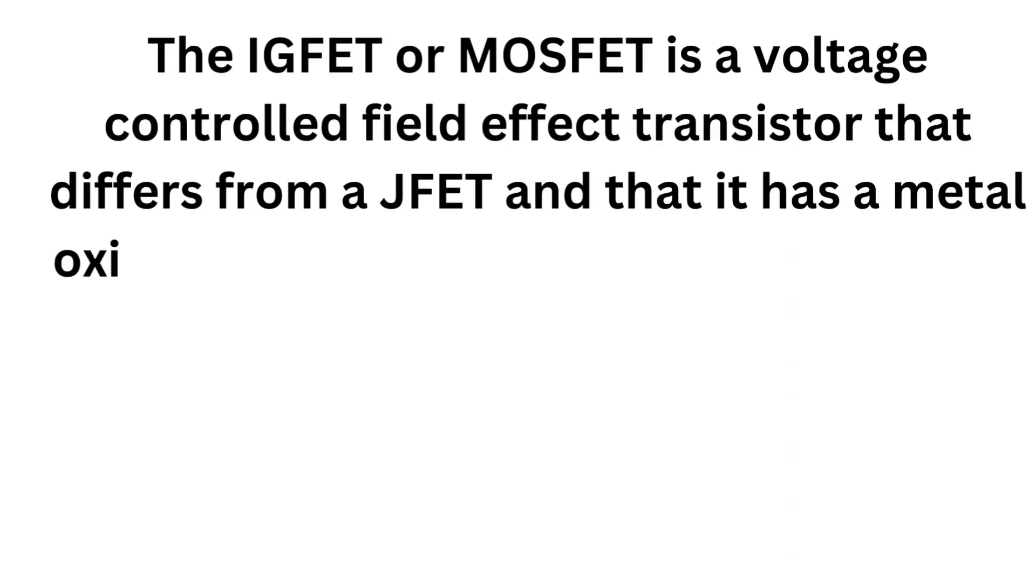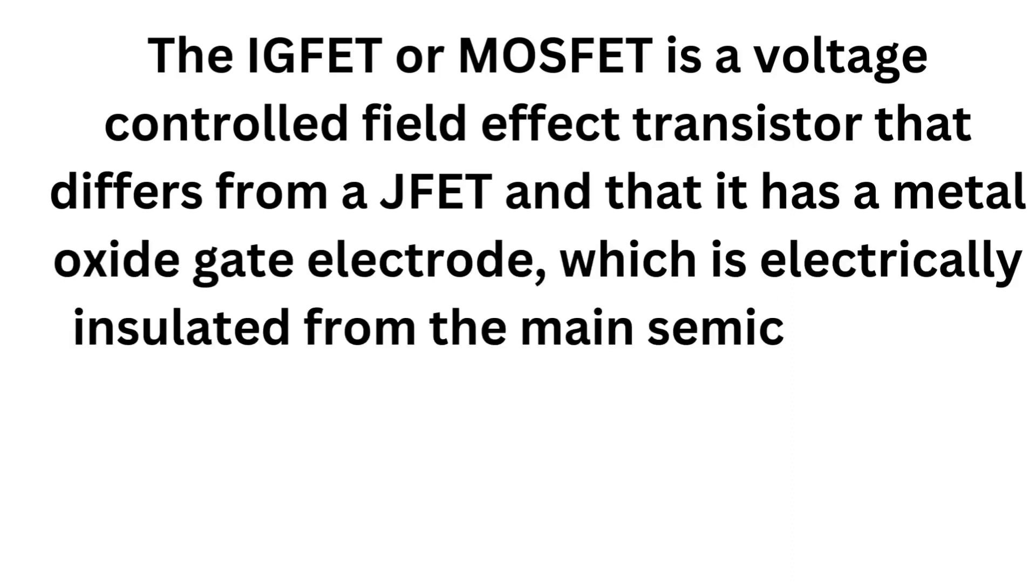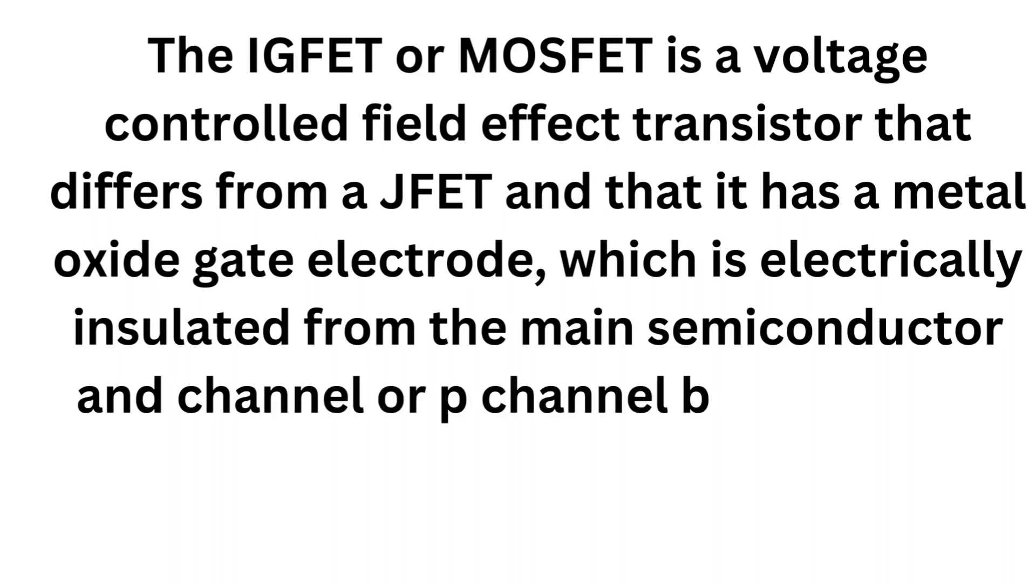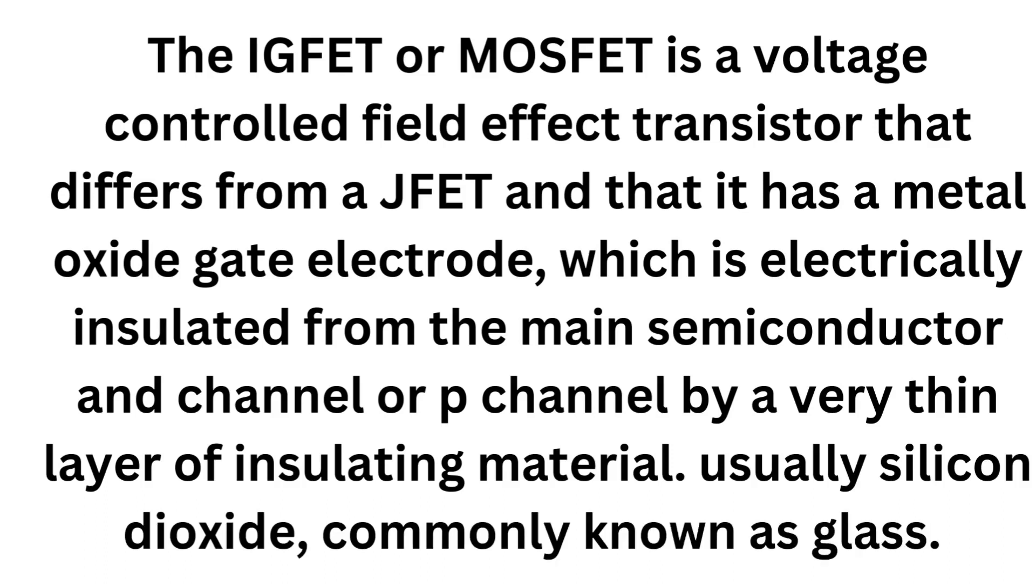The IGFET or MOSFET is a voltage-controlled field-effect transistor that differs from a JFET in that it has a metal oxide gate electrode, which is electrically insulated from the main semiconductor N-channel or P-channel by a very thin layer of insulating material, usually silicon dioxide, commonly known as glass.